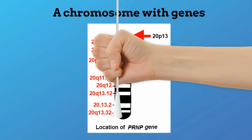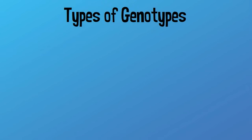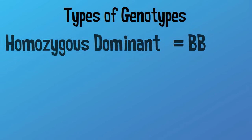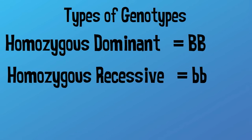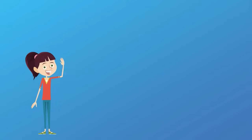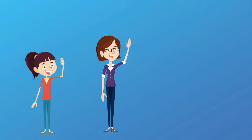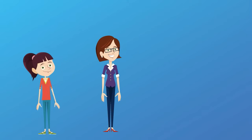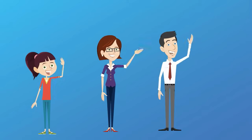In genetics you will encounter three types of genotypes: homozygous dominant, homozygous recessive, and heterozygous. You get some information from mom and some information from dad.